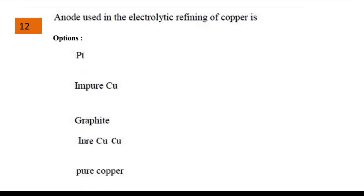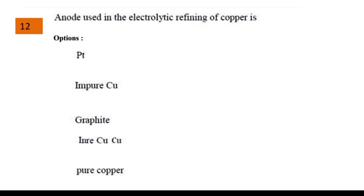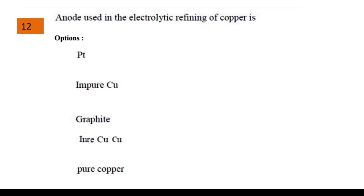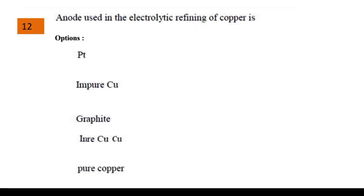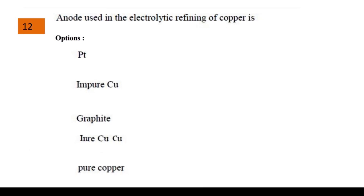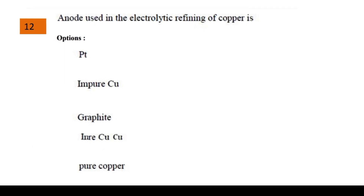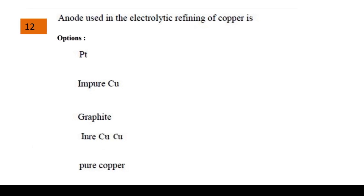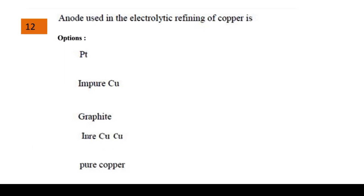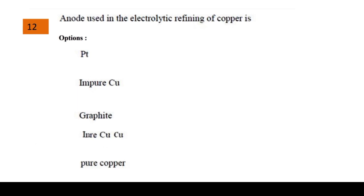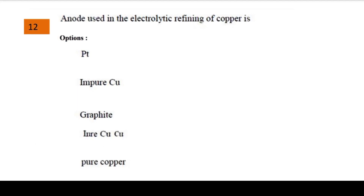Next question: the anode used in electrolytic refining of copper. The options were Pt, impure copper, graphite, and pure copper. The answer is impure copper — in electrolytic refining, the anode is made of impure copper.